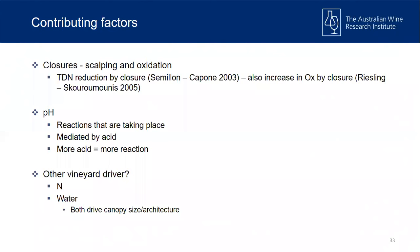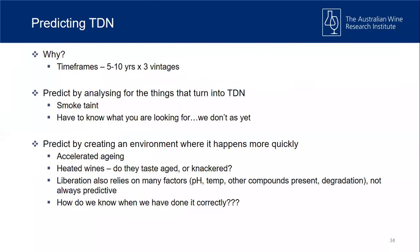Predicting TDN is challenging: in young wine we can't analyze for what's not there, and if we want to understand what happens in a five-to-ten-year-old Riesling and run trials year after year, we're talking 15 to 30 years for an answer. One approach, analogous to smoke taint analysis, is to analyze for precursors and develop models for how much gets broken down during fermentation and bottle aging. But we don't yet know what we'd be looking for. Another approach is accelerated aging — creating an environment where formation happens more quickly.